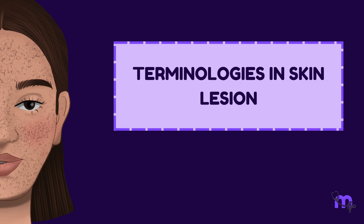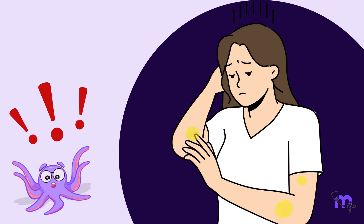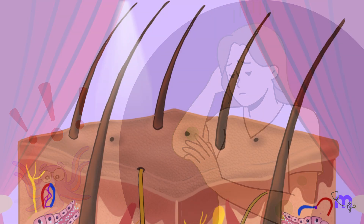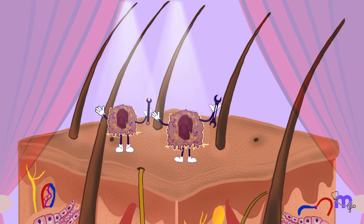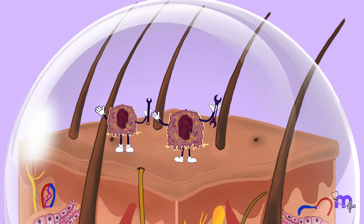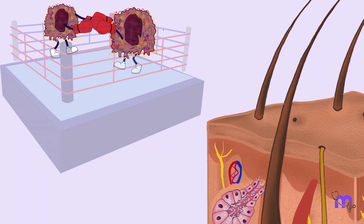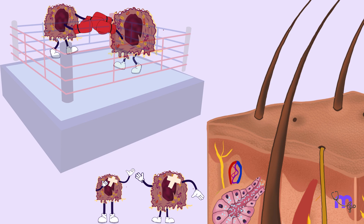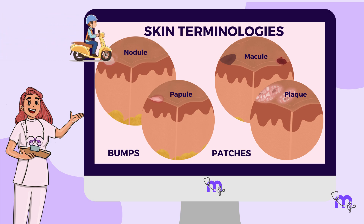Terminologies in skin lesions. Have you ever wondered what pimples are or why a bruise turns yellow and green before fading? Our skin is like a stage for a play. The actors in this play are special cells that work tirelessly to keep your skin healthy and protected. But sometimes these cells get into arguments and injuries disrupt the scene — it is all about the drama unfolding beneath the surface of your skin. Through this video, let me walk you into a world of skin terminologies used to describe the different bumps and patches that show up on our skin.